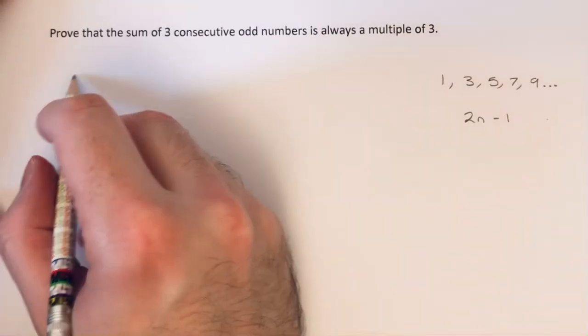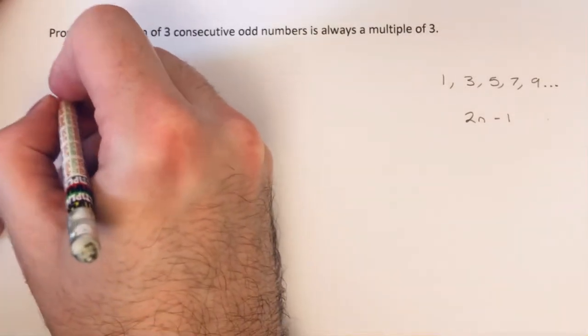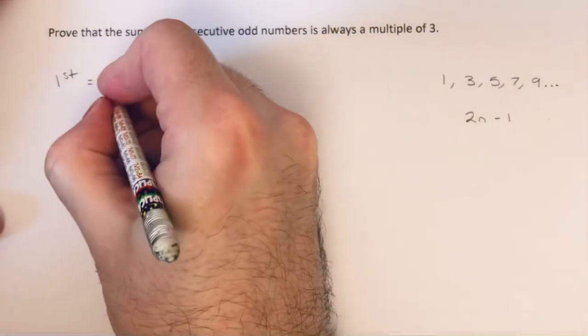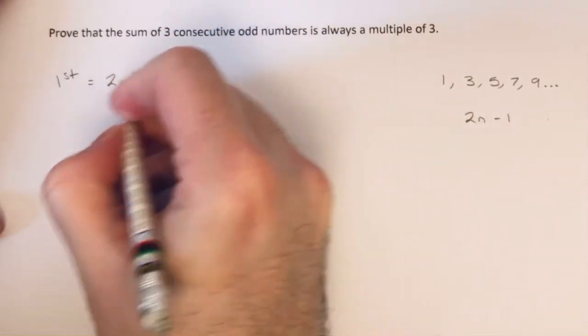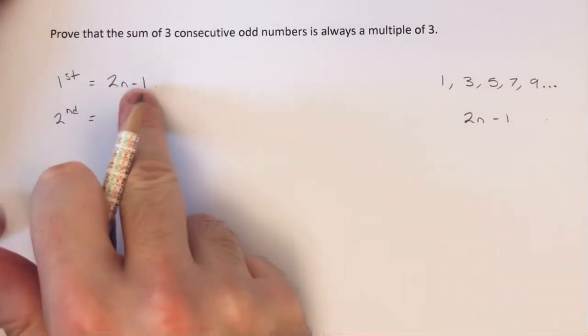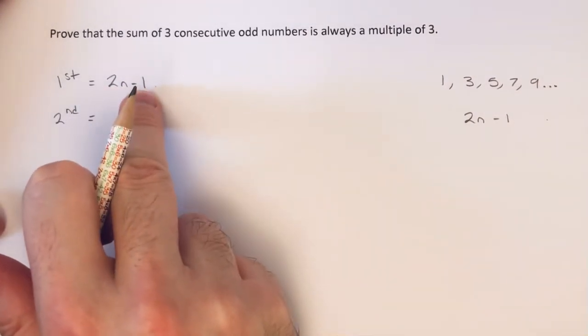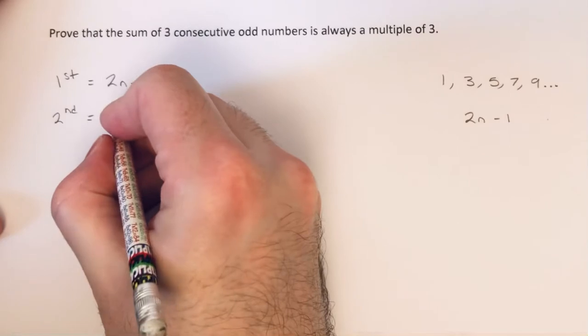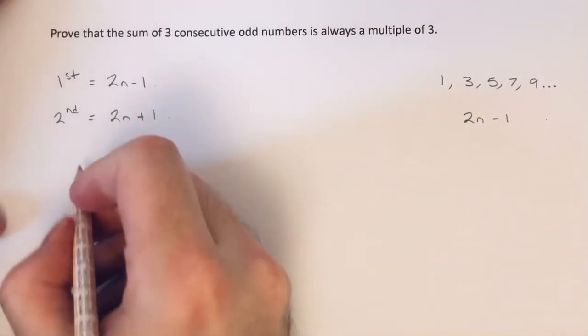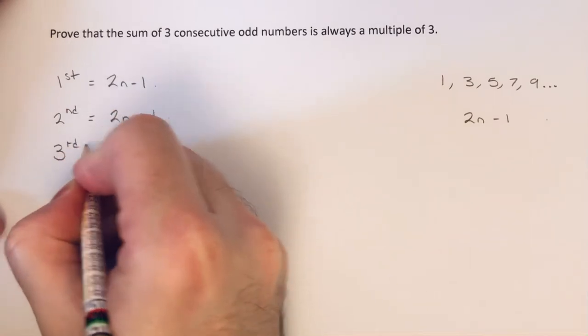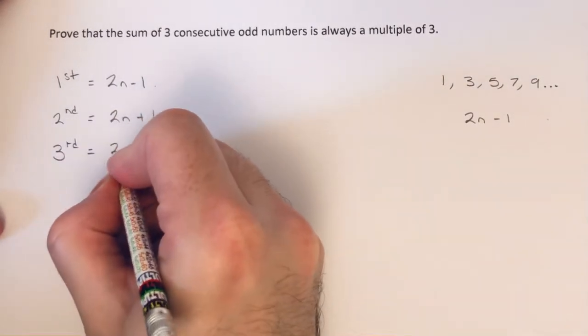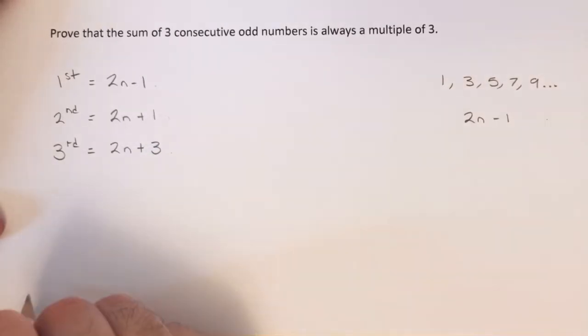So let's get back to our proof then. Let's call our first odd number 2n minus 1. That means our second odd number would be 2 ahead of this. So if we add 2 onto 2n minus 1, that would give us 2n plus 1. And then our third odd number would be another 2 onto this last one, which would be 2n plus 3.